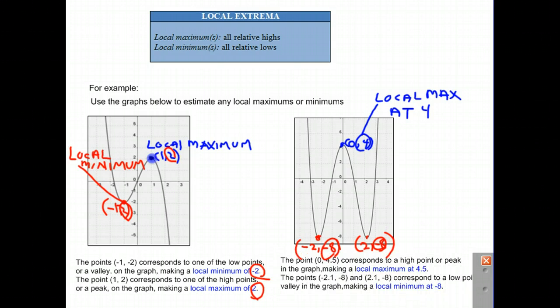To reiterate that, the point 0, 4.5 corresponds to a high point or peak in the graph, making a local maximum at 4.5. And that is our maximum. The points at negative 2.1, negative 8 and positive 2.1, negative 8 correspond to low points, and therefore that makes a local minimum at negative 8.